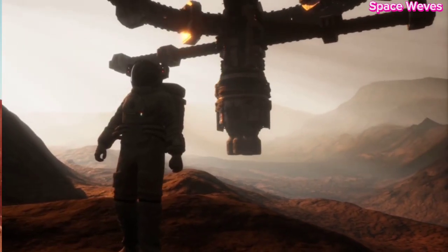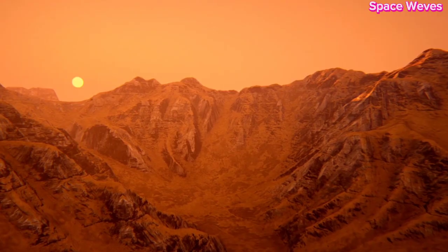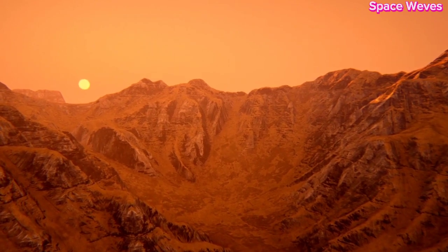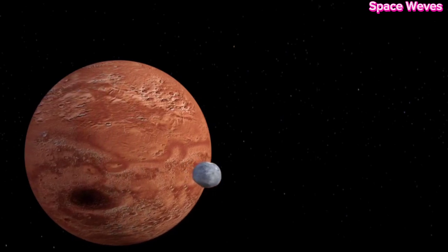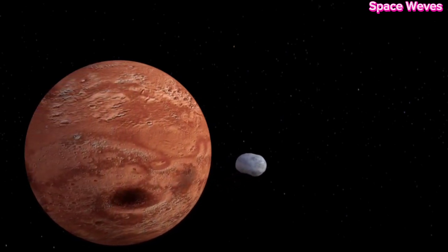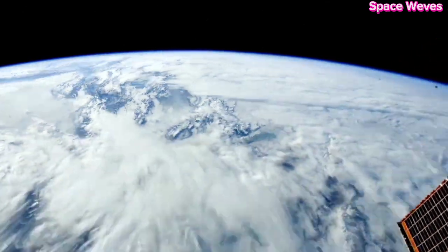Three, supernova remnant. Regardless of whether it leaves behind a neutron star or a black hole, the explosion will produce a vast supernova remnant, a cloud of gas and dust that will eventually mix with the interstellar medium. Over millions of years, this material could contribute to the formation of new stars and planets.